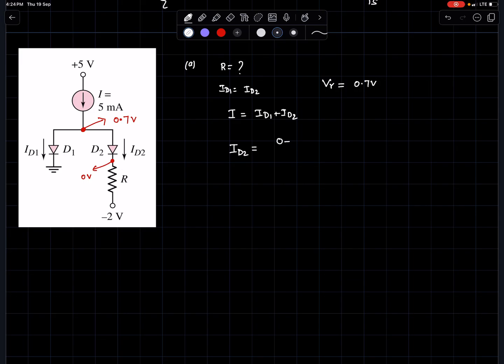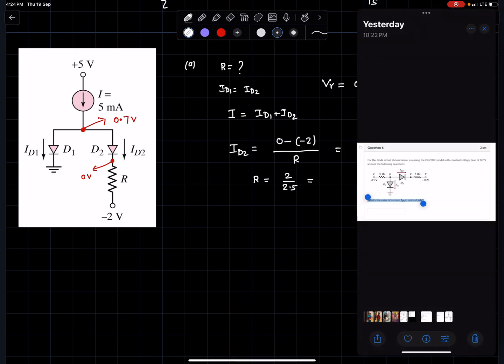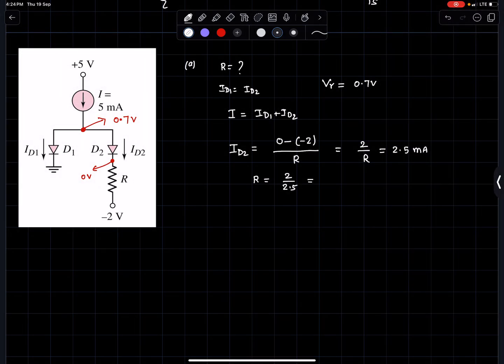From the circuit, id2 equals 0 minus negative 2 volts over R, which is 2 over R. In part (a), id2 must be 2.5 milliamperes because both diode currents are the same. So 2 over 2.5 milliamperes equals 800 ohms.